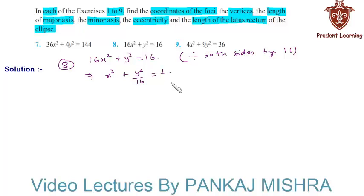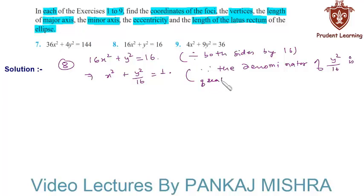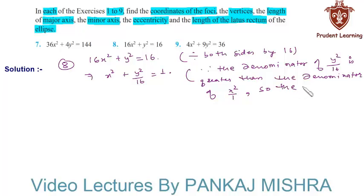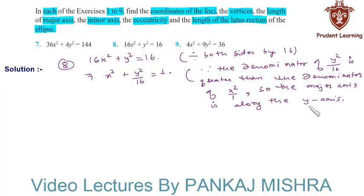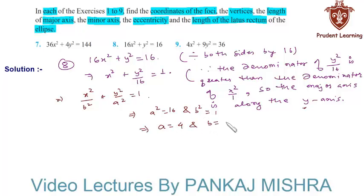Now since the denominator of y²/16 is greater than the denominator of x²/1, the major axis is along the y-axis. On comparing the given equation with the standard form of an ellipse whose major axis is along the y-axis, that is x²/b² + y²/a² = 1, here we see that a² = 16 and b² = 1, which implies a = 4 and b = 1.